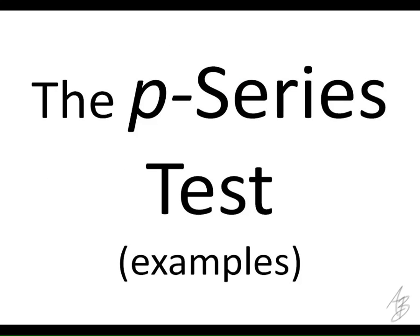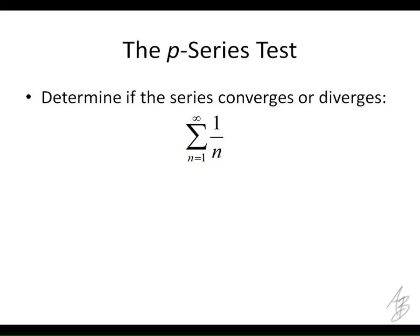So the P-series test is a very straightforward test to use if this series is a P-series. And so if we get a series that looks like this, that's a P-series. What is P equal in this case? Yeah, so P equals 1. So besides the fact that it's a harmonic series, it's also a P-series. Harmonic series is a specific type of P-series. So since P equals 1, which is less than or equal to 1, then what does that mean? This one diverges.